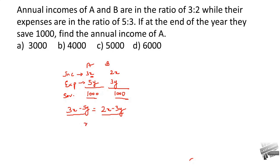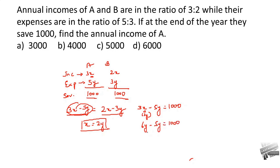Solving gives x equals 2y. Substituting into 3x minus 5y equals 1000: we get 6y minus 5y equals 1000, so y equals 1000 and x equals 2000. The annual income of A is 3x, which is 3 multiplied by 2000, giving us 6000. So 6000 is our answer.